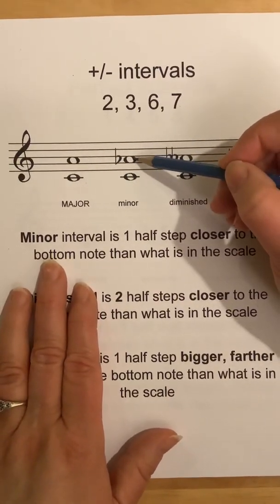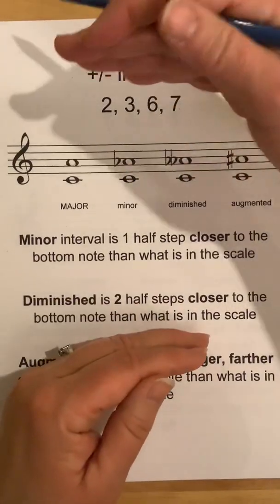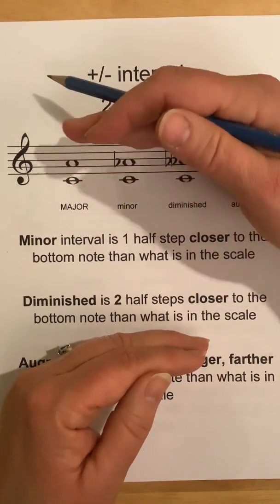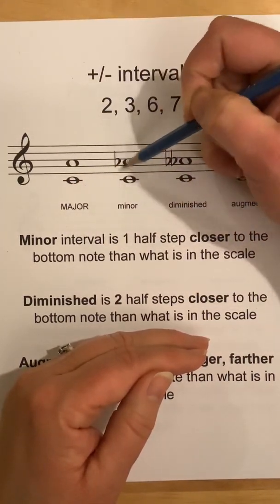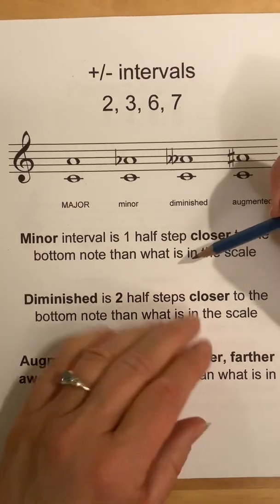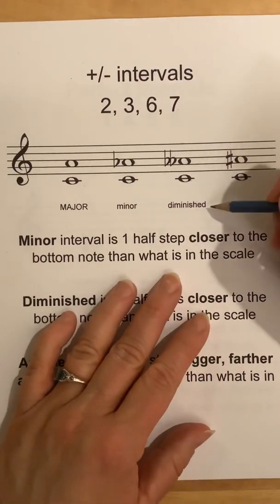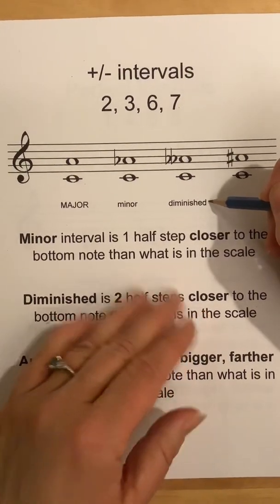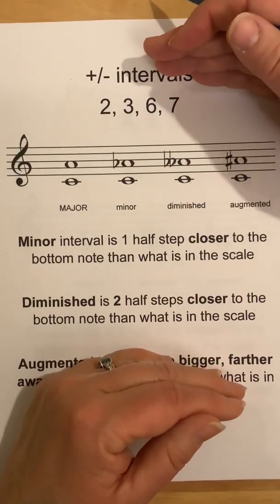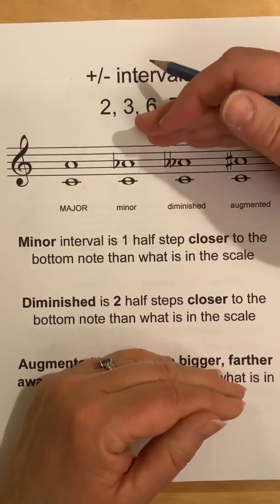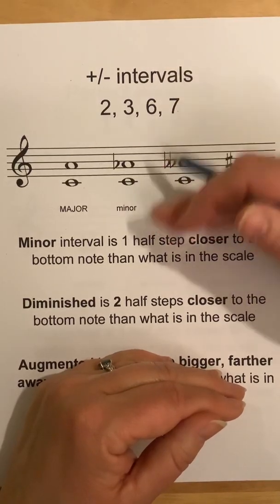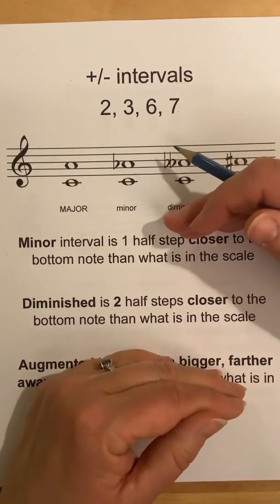We already know that if the top note is closer by a half step — so it's a half step lower than what's in the scale — it's a minor interval. Now we have diminished and augmented intervals. For diminished, that top note is two half steps closer to the bottom note.